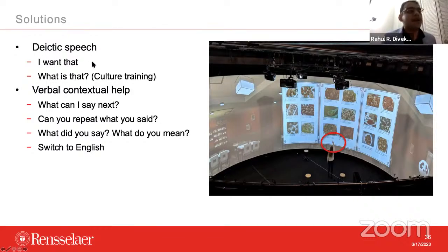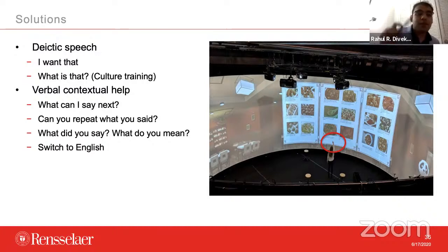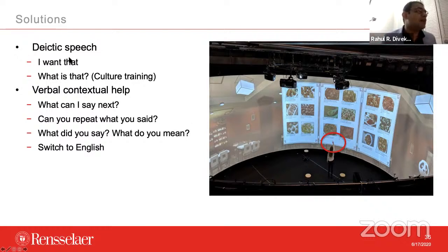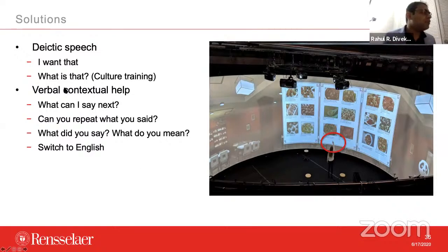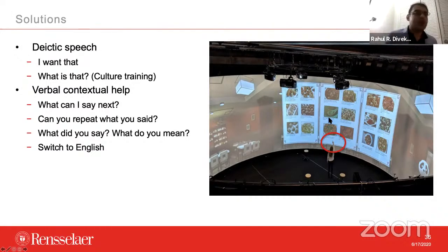You could also ask 'What is that?' and the AI agent will come up with an explanation, which also helps teach culture since food usually has some cultural background — a king used to make it, a religion used to make it, this is the country it originates from. Other verbal contextual helps: you can ask the AI agent 'What can I say next?' — try doing that with Alexa; it will have no answer. You can also say 'Can you repeat what you said?' For language learners, the agent should repeat it along with an explanation — repeating 500 times without explanation won't help. Other commands: 'What did you say? What did you mean? Explain yourself.' And as a catch-all, if everything fails, just switch to English.